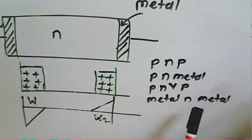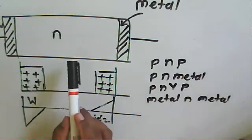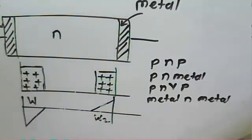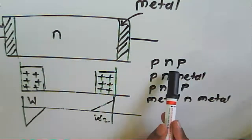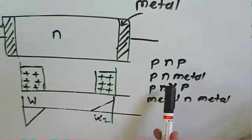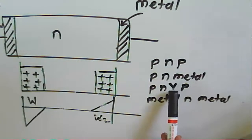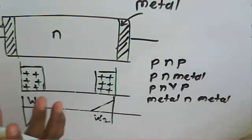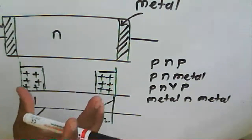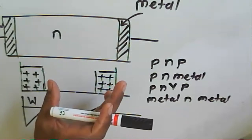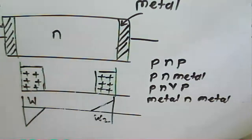In the metal-N-metal structure, the N region is connected to two metallic contacts. In the P-N-P case, N is connected to P on both sides. There is also a V (drift) region used to drift electrons through, which are then collected at the other end. This is why the BARITT diode works in the negative resistance region.